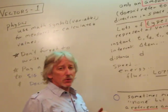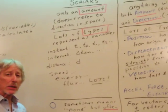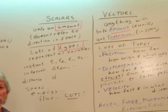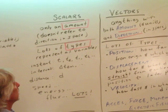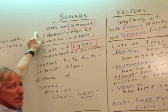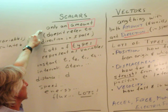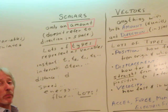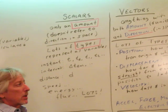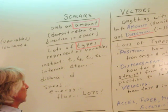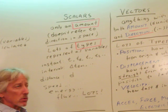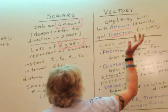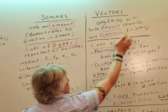So let's go over and talk about the difference between scalars and vectors. Scalars and vectors are two different types of quantities, and they're very general. So a scalar is anything that only has an amount, and it doesn't refer to any direction in space. Whereas a vector is anything that has both amount, with units of course always, and direction in space.